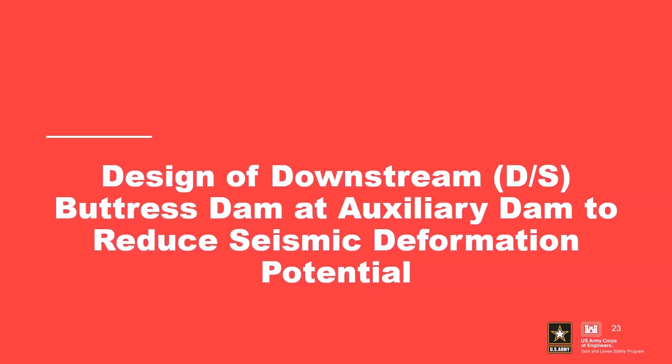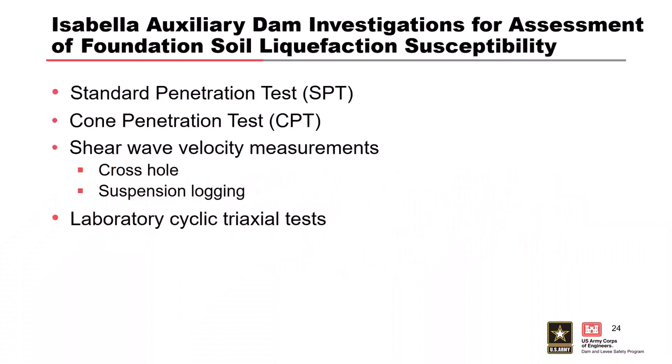The next section covers the design of the downstream buttress to reduce seismic deformation potential. This project was heavily studied during the dam safety modification study phase to understand the problems. We had to add some investigation programs during design to tighten up understanding of what needed to be designed and put out for contract.